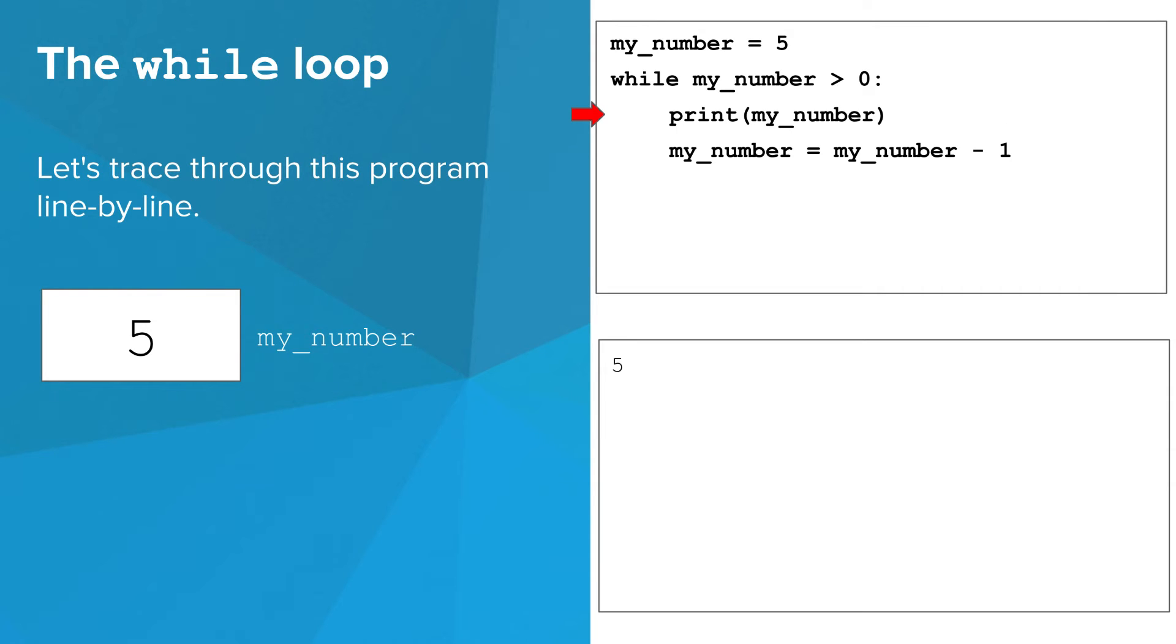The value of my_number gets printed, and then the value of my_number changes to 4. Here's the weird thing about a while loop. It isn't finished when the last line of the body has run. What happens is the interpreter goes back to the top and evaluates the condition again, as though it were seeing it for the first time.